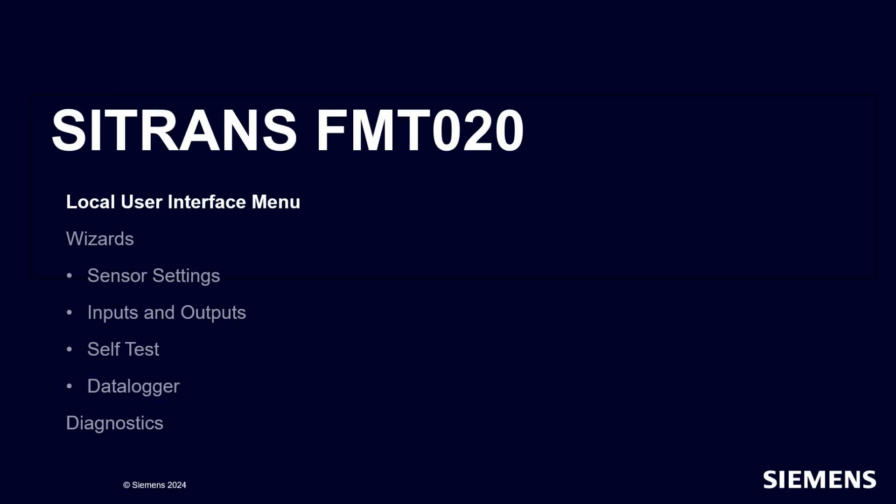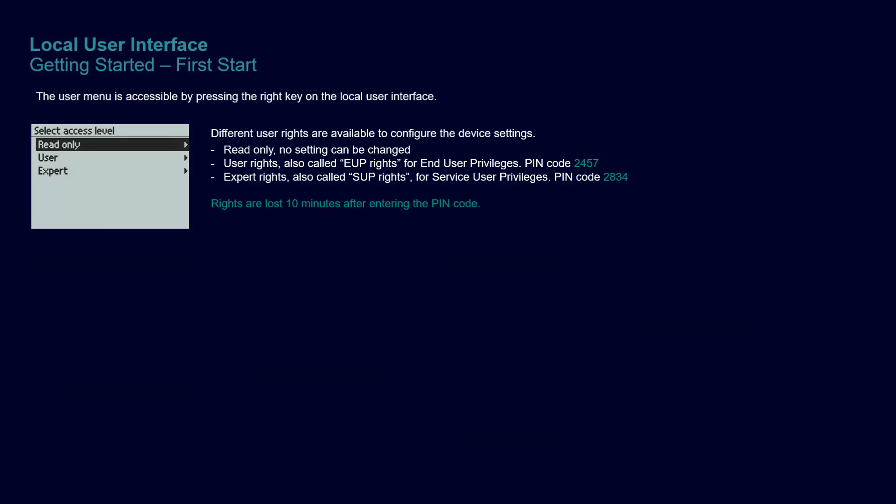Let's have a quick look at the local user interface when you first power up the product. The first thing to know is that you can enter the menu by pressing the right key. Depending on which parameters you need to set, you will need to set the right PIN code. By default, the menu is read-only to avoid unintentional parameter changes, and this will be the default state after 10 minutes of inactivity.